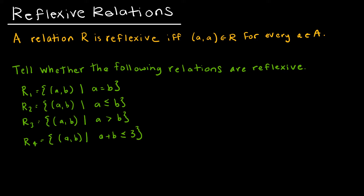Which one of these four relations are reflexive? These should look familiar because we just talked about them. If I'm entering values into R1, is it true that all (A, A)'s would be in this relation? The answer is yes, because A does equal A.